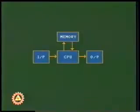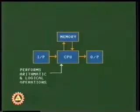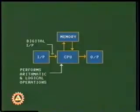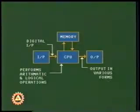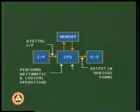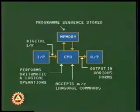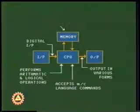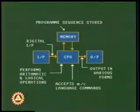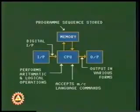As a processing unit of a computer, the microprocessor performs arithmetic and logical operations on binary words. From the external world it accepts digital input and provides output in various forms. It accepts machine language commands; its behavior may be changed at will by issuing appropriate commands in binary. It can be programmed — that is, a sequence of machine language instructions called a program may be stored inside a computer and would be eventually executed by the processor step by step when called for. Such a program defines the outward behavior of the machine.